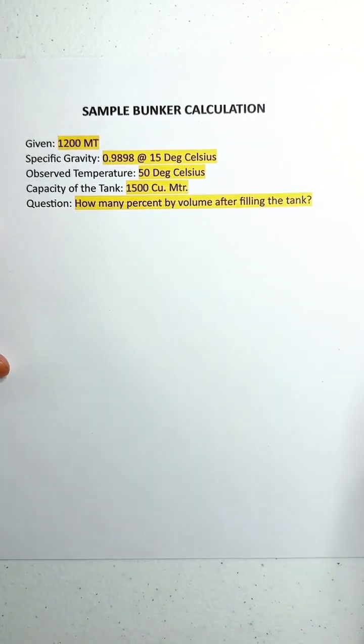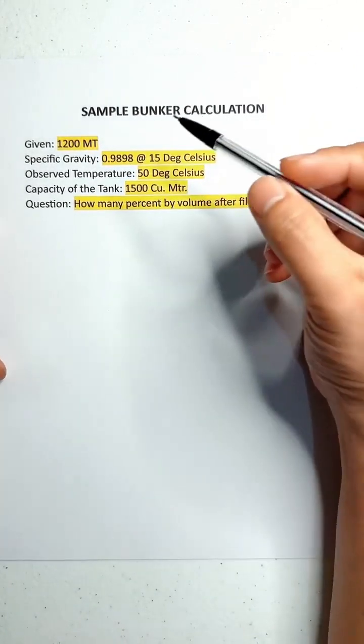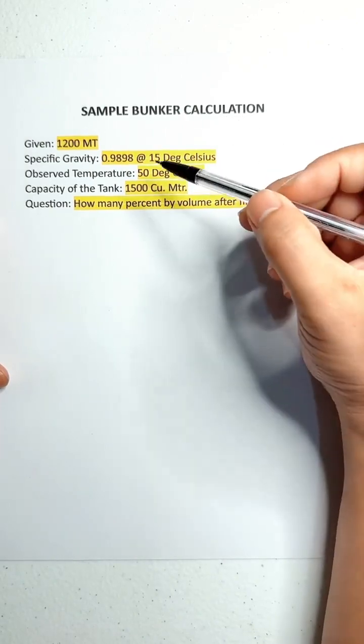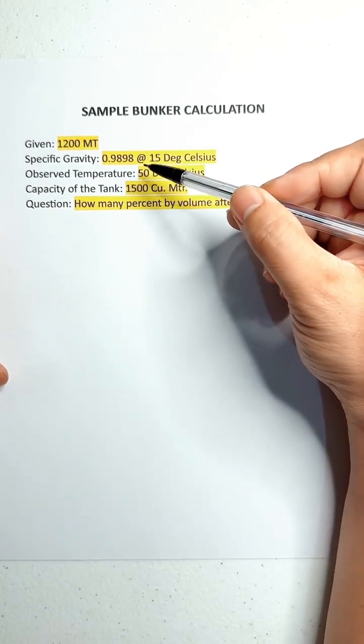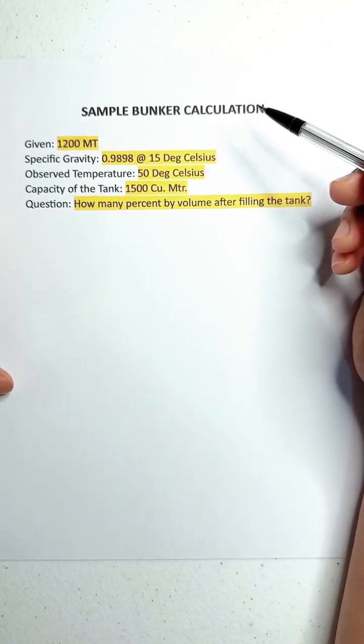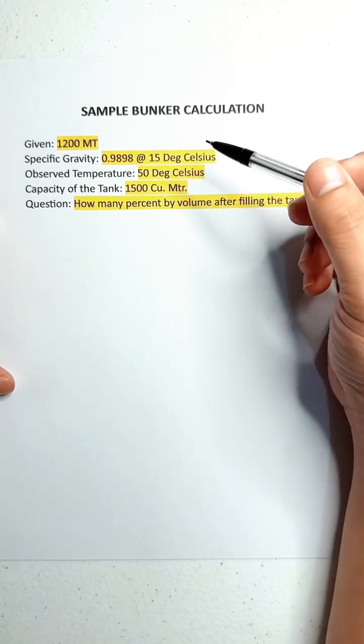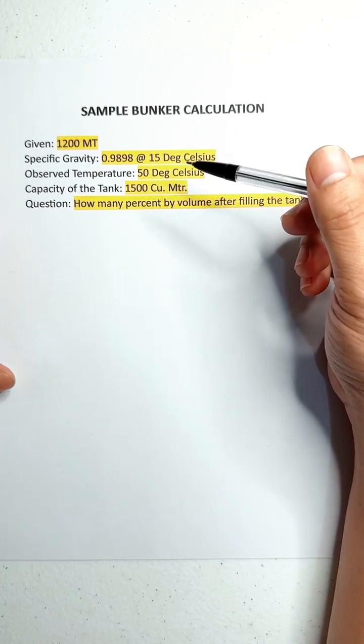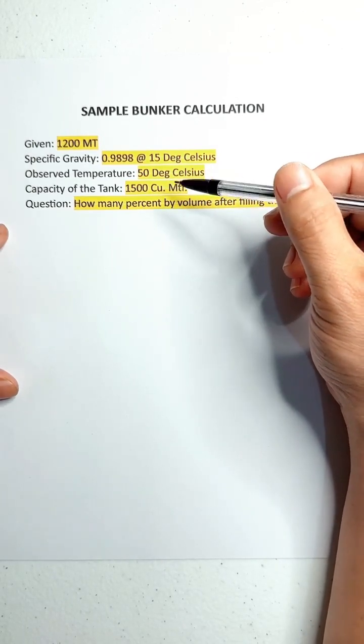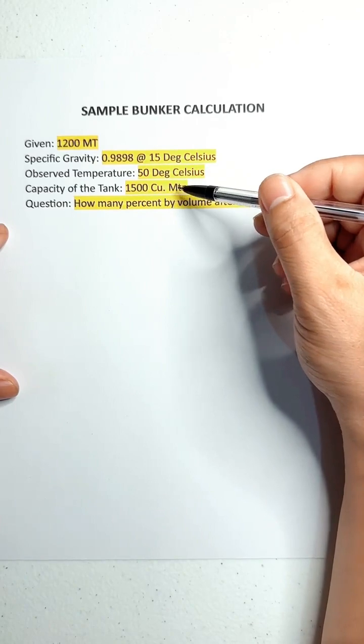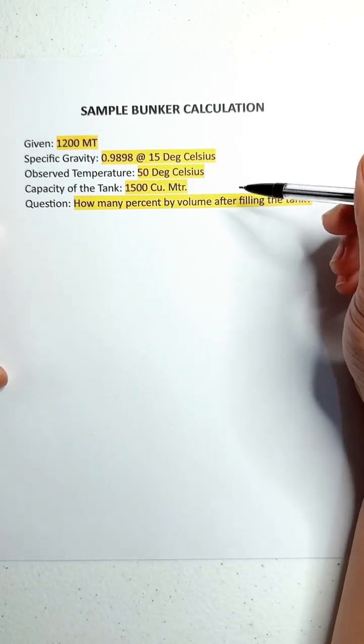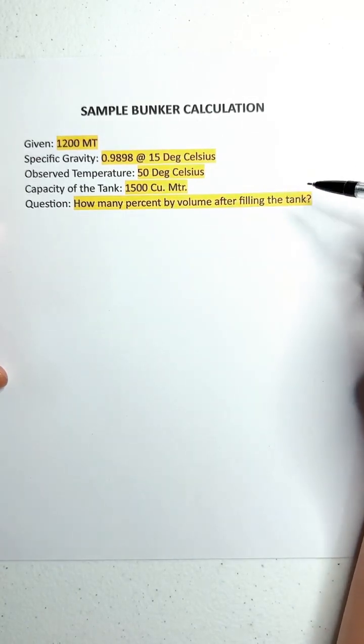We have 1,200 metric tons to be bunkered, and the specific gravity is 0.9898 at 15 degrees Celsius. Assuming that the temperature during the bunkering is 50 degrees Celsius, and the capacity of the tank is 1,500 cubic meters. The question is: how many percent by volume after filling the tank?